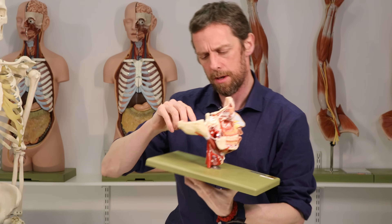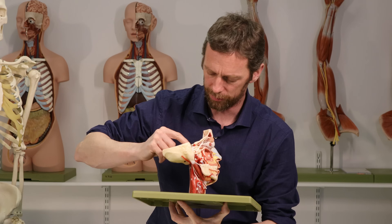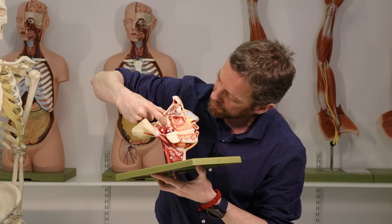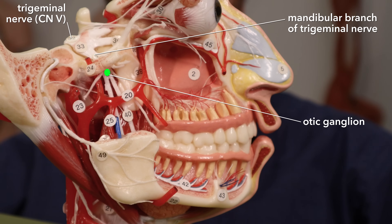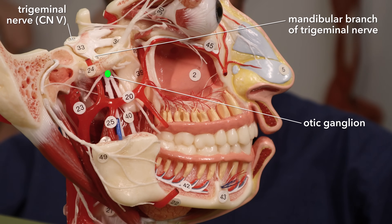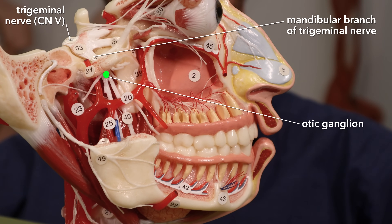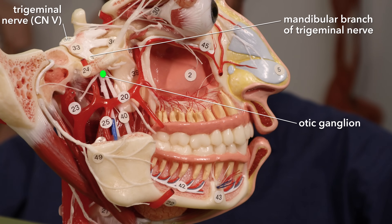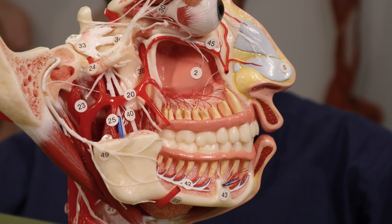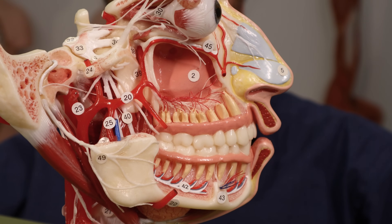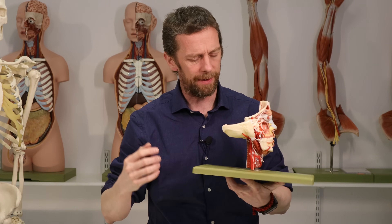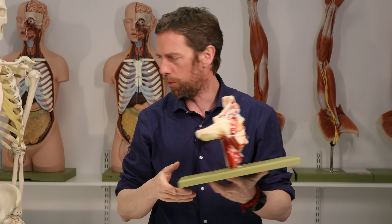On this model, there's the trigeminal nerve and the mandibular branch, so the otic ganglion would be about there — it's not shown, but it would be there. That is a busy space with a lot going on. We've got the parotid gland, the otic ganglion, and the glossopharyngeal nerve — let's put it all together. The other thing we need is the pons, the part of the brain stem where we begin.